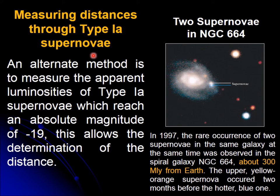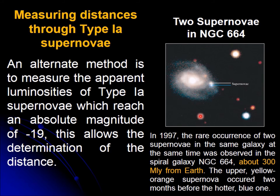Another technique is by looking at Type 1a supernovae. Type 1a supernovae have the characteristic that we know how the event happens, and because of that, we know it's always going to be at minus 19 in absolute magnitude. So if we see a supernova, we can be sure the absolute magnitude is negative 19. But we also have the apparent magnitude, and with both the apparent and absolute magnitude, we can determine the distance. This nice picture shows two supernovae happening at the same time in this galaxy — a spiral galaxy, the NGC 664 — a rare case in which there are two supernovae back-to-back.